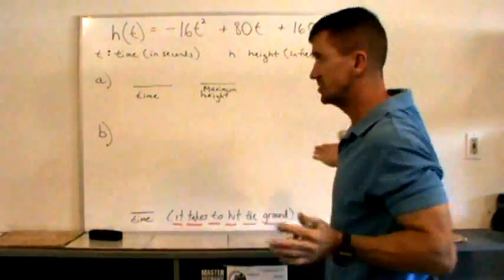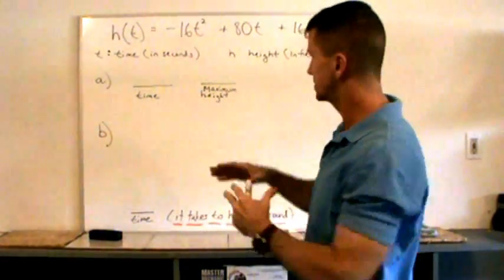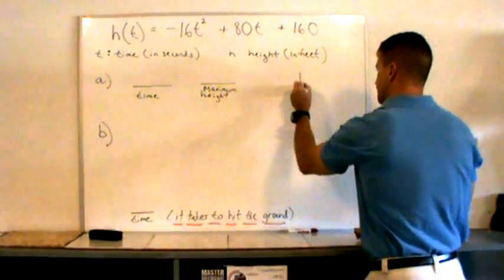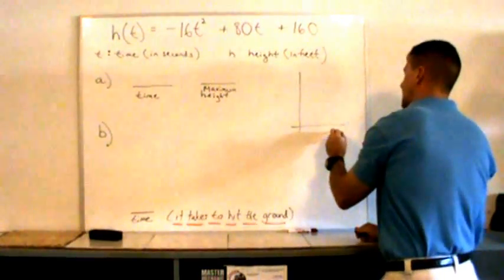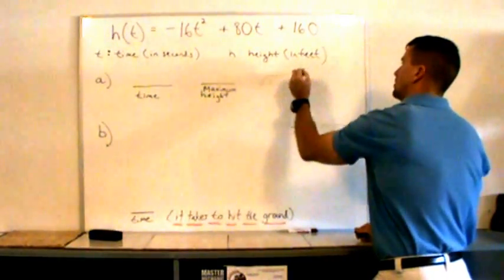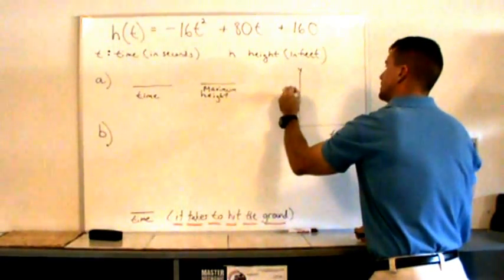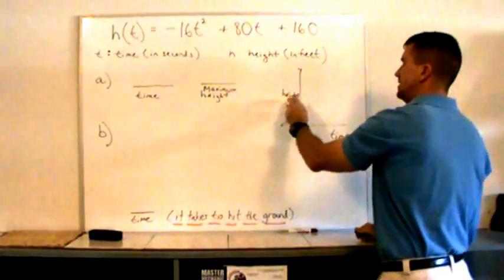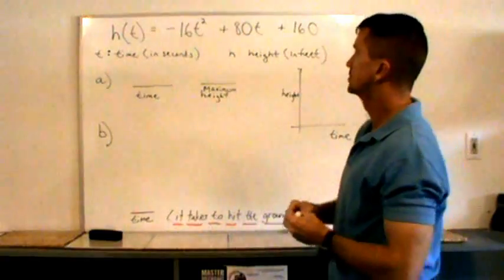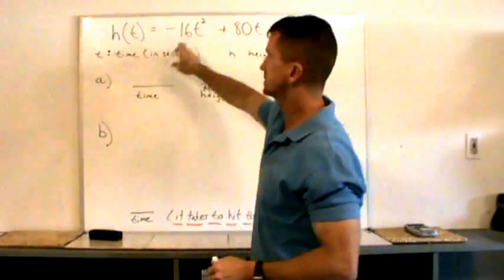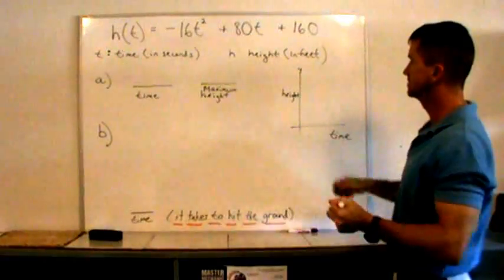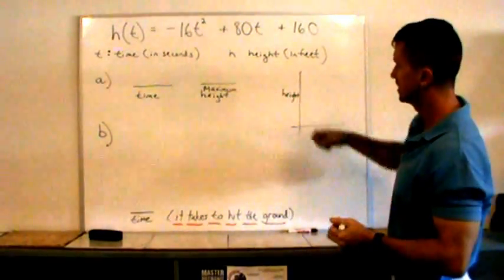So I think the first thing we should do is let's make a sketch, rough sketch, a picture of what's going on here. So I'm going to go to the side, just make a rough sketch. For the x variable, I'm going to call that time. And for the y variable, I'm going to call that height. And when the height is in feet, and the time is in seconds. So t is your x, h of t is your y, y-axis, x-axis. This is h of t, the height at a time t.